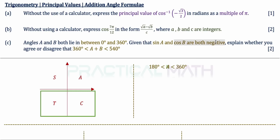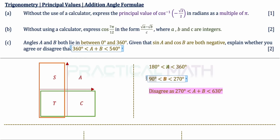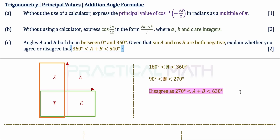Since cosine B is negative, it refers to the second and third quadrants, so B is in the range 90 to 270 degrees, not inclusive. Adding the bounds: A + B ranges from 180 + 90 = 270 on the left to 360 + 270 = 630 on the right. Therefore, I disagree — A plus B is actually in the range 270 to 630 degrees, not inclusive.